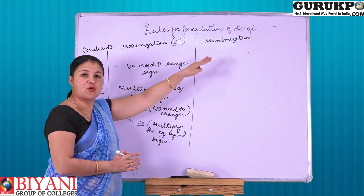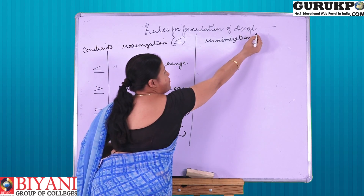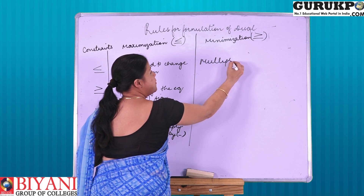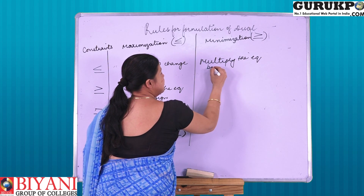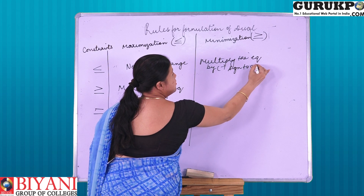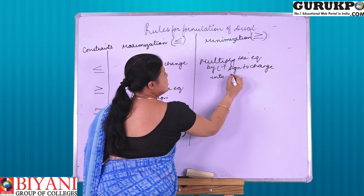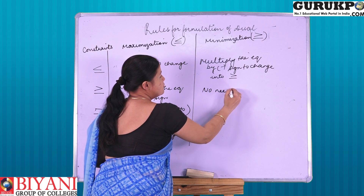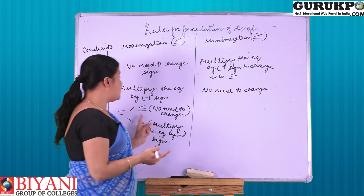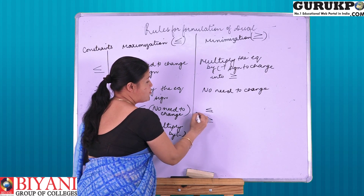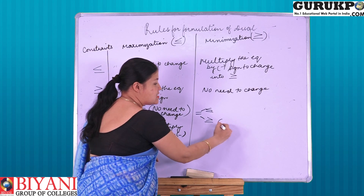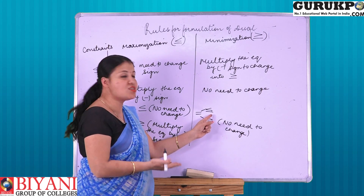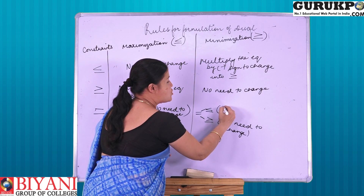In the same way, we apply the procedure for minimization sign. For minimization, we require the sign to be in this particular form. As the sign is in maximization form, we will multiply the whole equation by a negative sign to change it into minimization form. The next constraint is in minimization form, so no need to change the sign. If the equation is in equal-to sign, it comprises both signs, so no need to change it — it is already in minimization form. And if the sign is in maximization form, we multiply the whole equation by a negative sign.